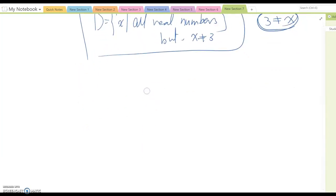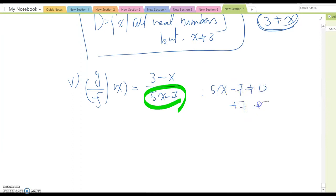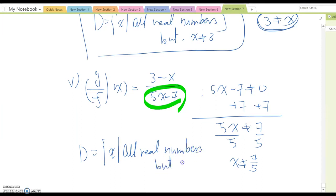Then simply, number 5, number 5 case, we are doing (g/f)(x). Right. So if I skip one step, then it becomes (3 - x) over (5x - 7). So this case, now we know this cannot be zero. Therefore you set up 5x minus 7 cannot be zero, and then solve for x from here. Then x cannot be 7 over 5. So domain, you can write x can be all real numbers, but x cannot be 7/5.